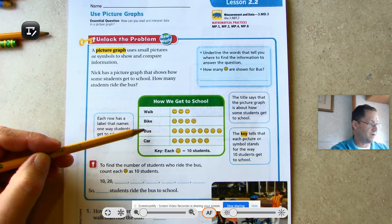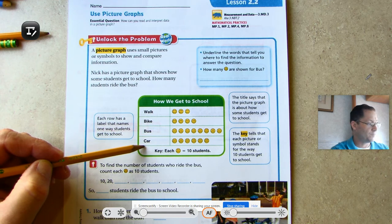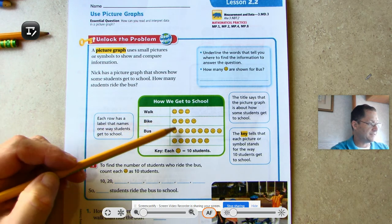We see the title of our graph or table is how we get to school. People walk, they bike, they bus, and they also get to ride in a car.